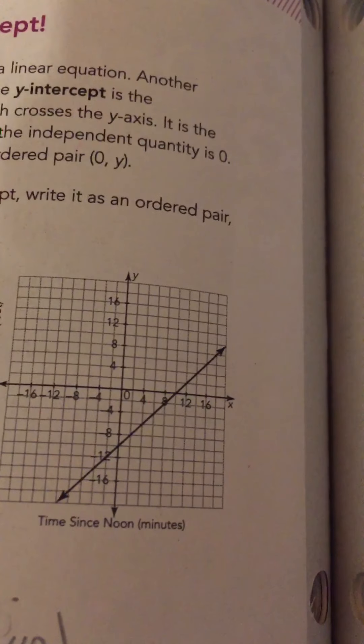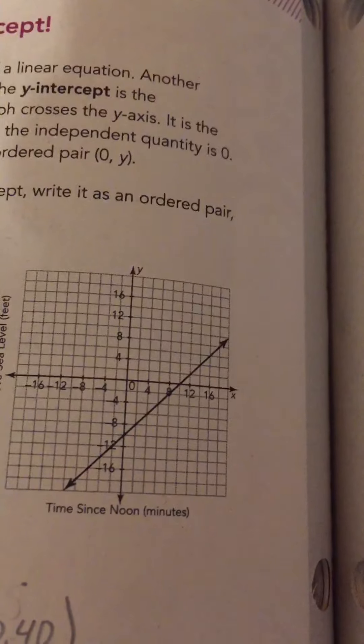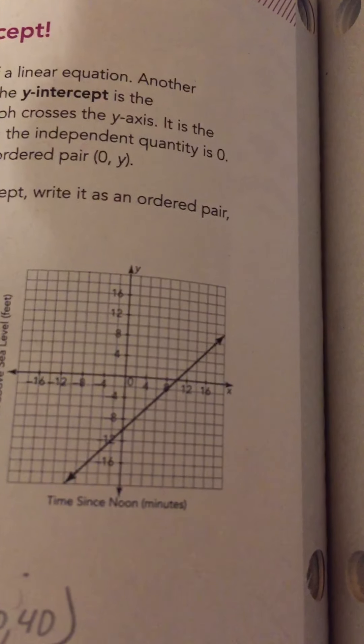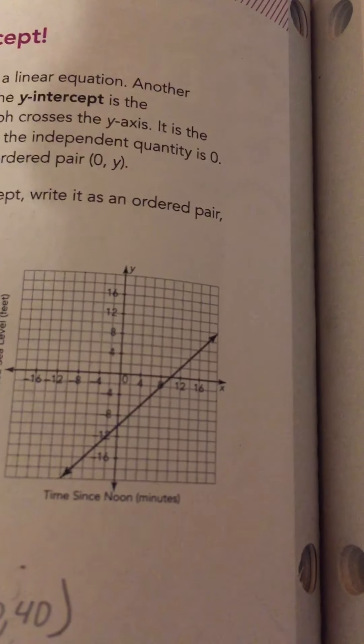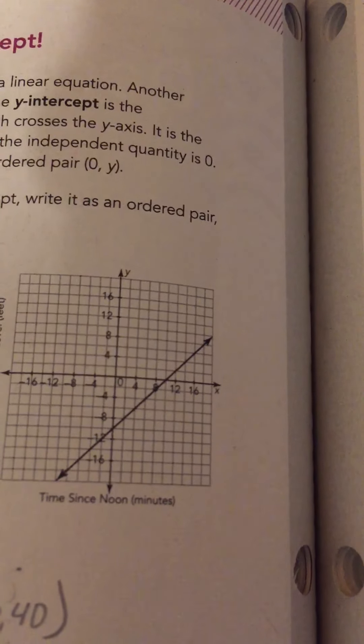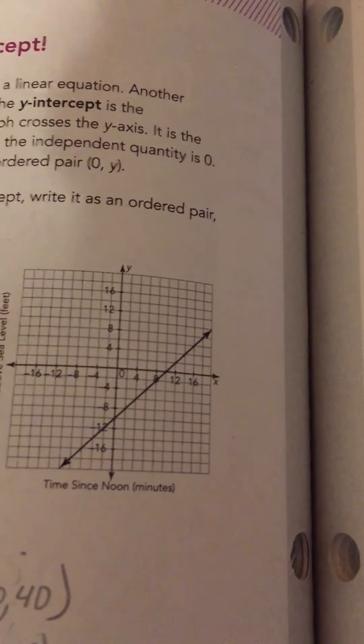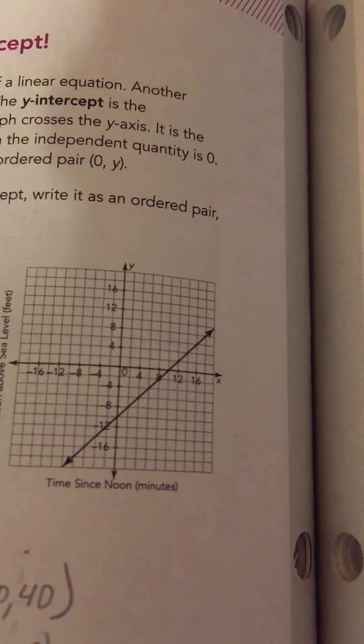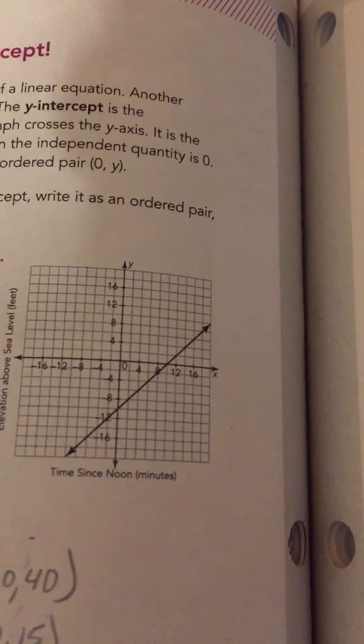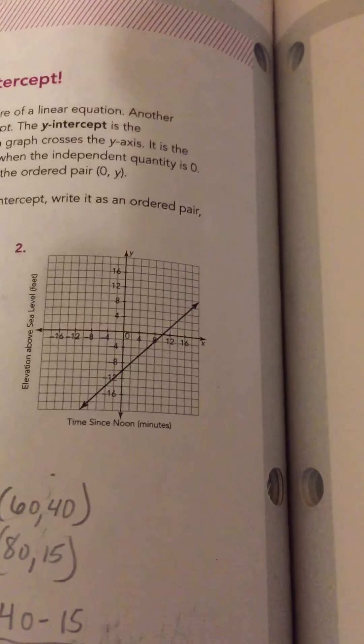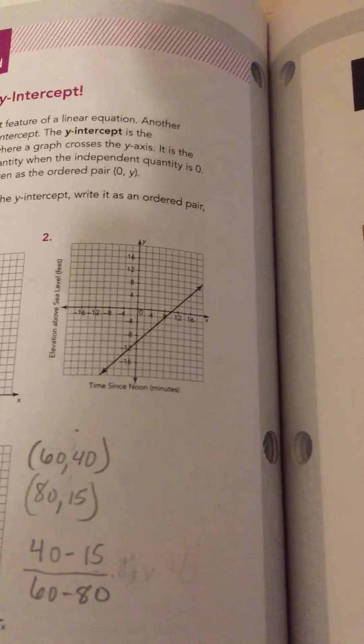We can also see in 2, where the line crosses the y-axis, is at 0, negative... Gosh, that's a little bit hard to tell. Negative 10. Sorry, I'm losing my mind. So, each line was going down by 2's.